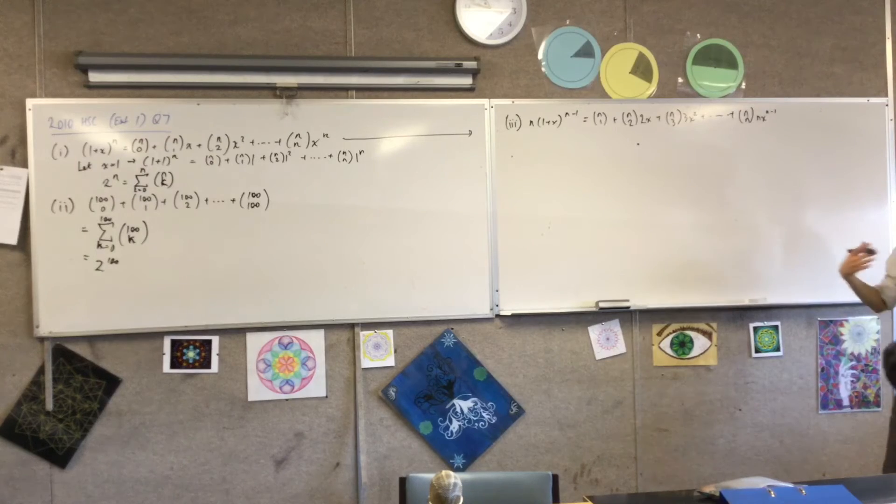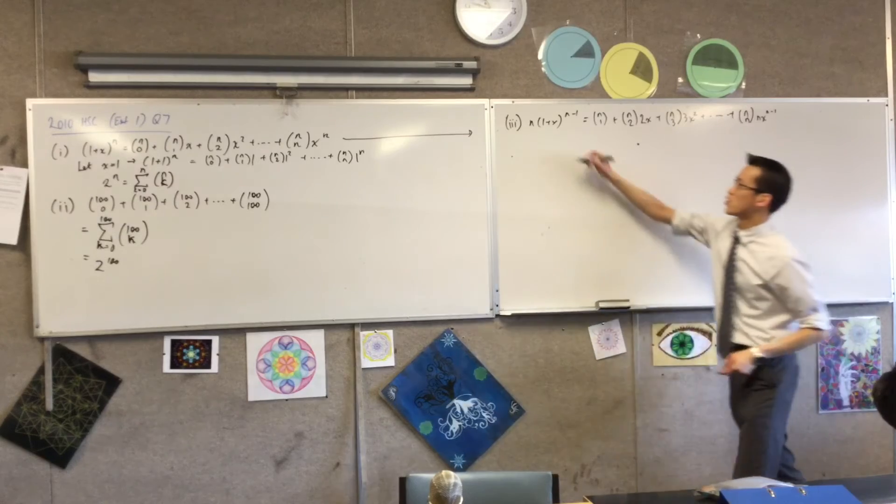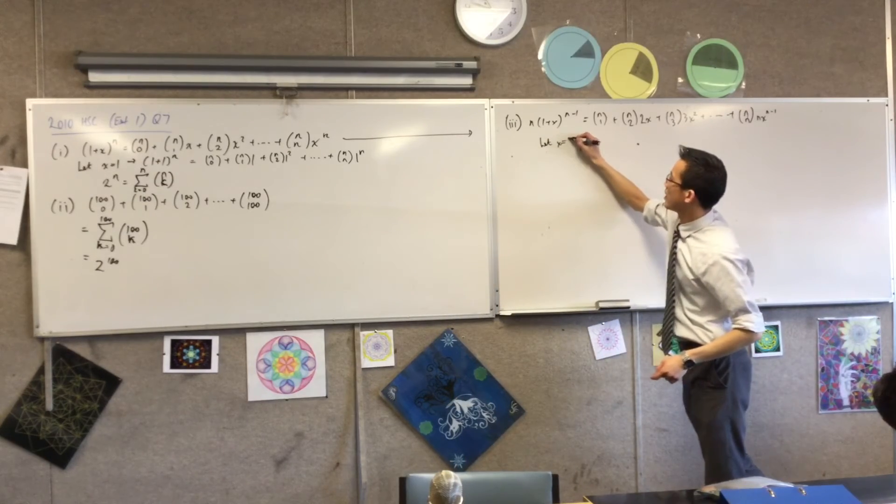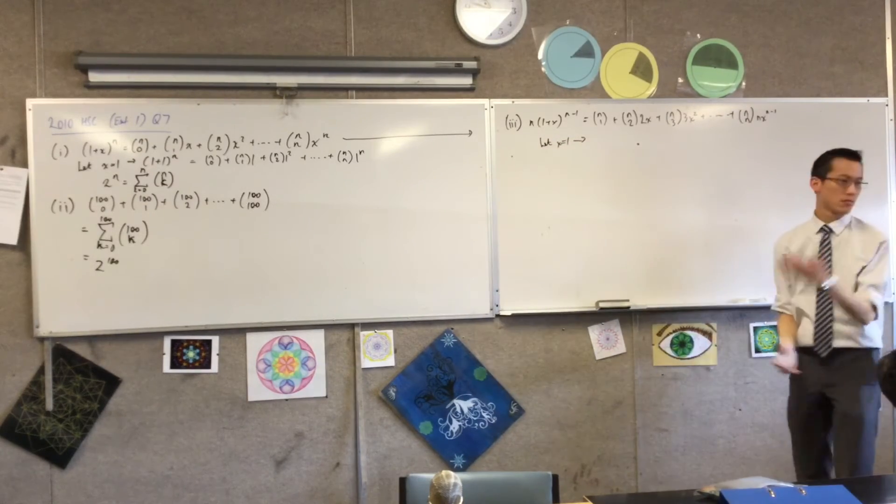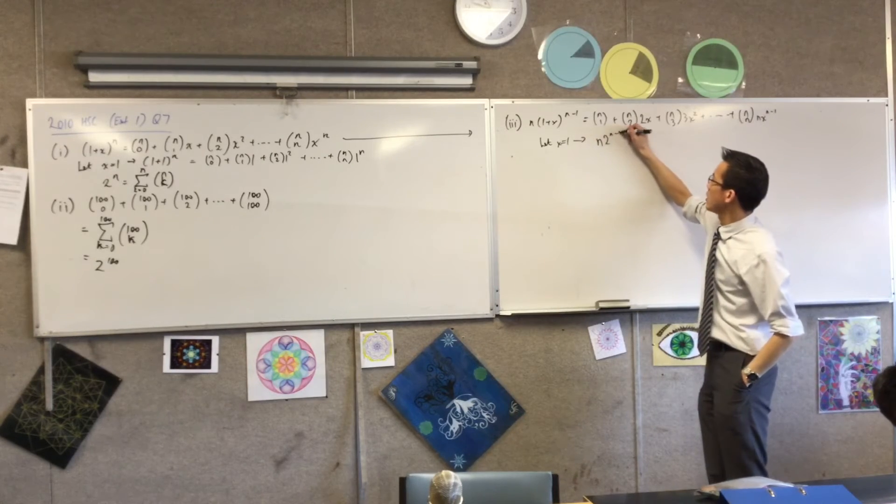So now that I've got this, I've done all the stuff with the x's, now I can actually make the substitution, right? So just like I did before, I'm going to let x equal 1, and then the result that you need, it pops out. Okay? So it's going to be n times 2 to the (n-1).